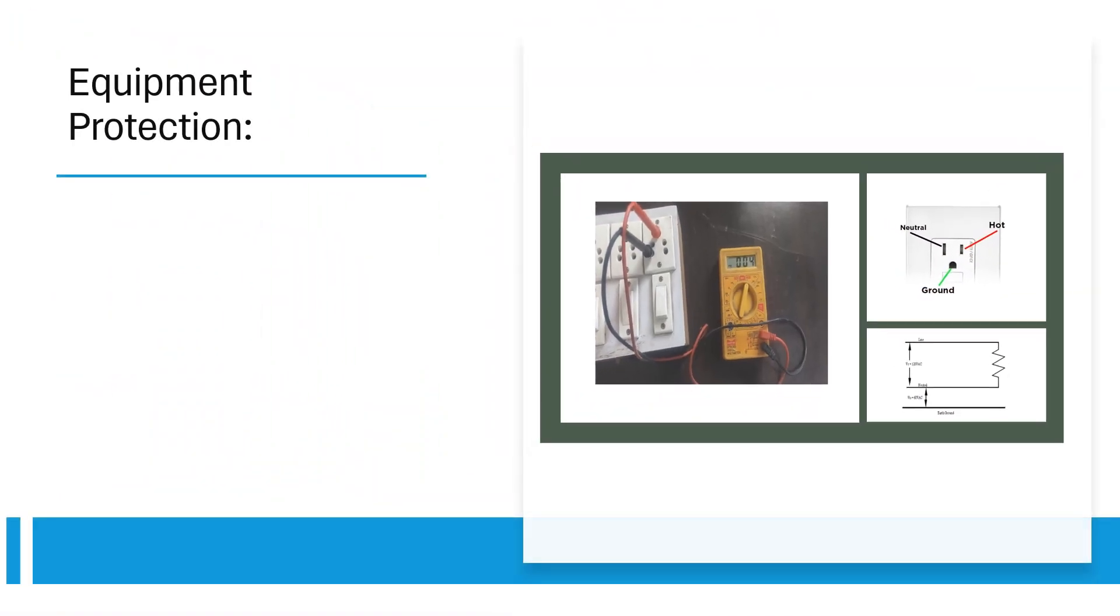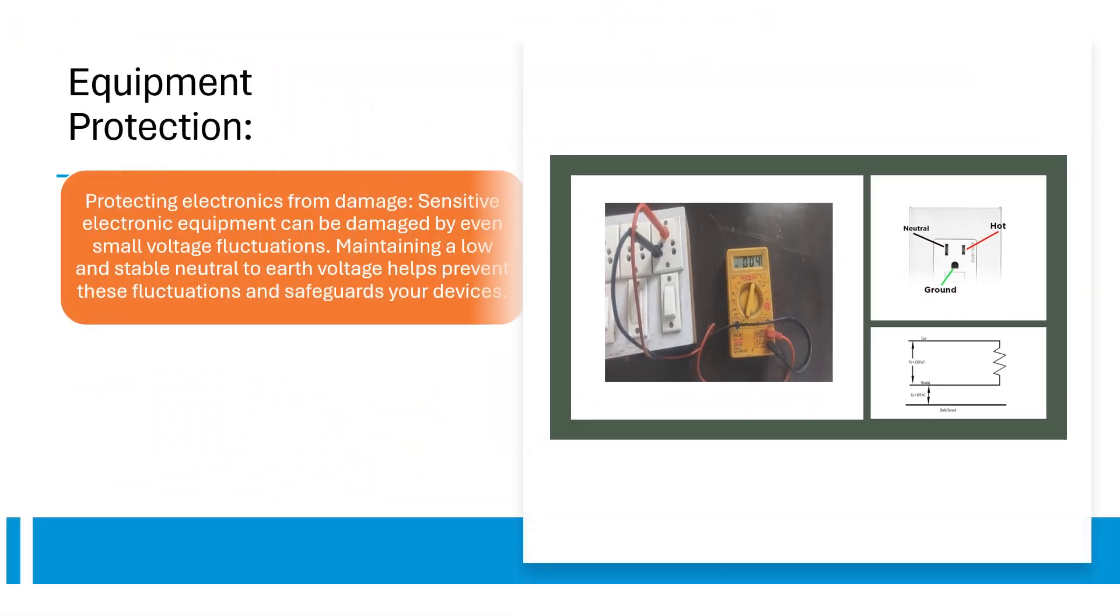Equipment protection. Protecting electronics from damage. Sensitive electronic equipment can be damaged by even small voltage fluctuations. Maintaining a low and stable neutral to earth voltage helps prevent these fluctuations and safeguards your devices.